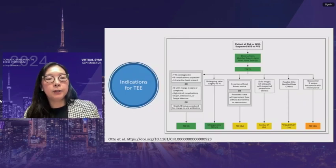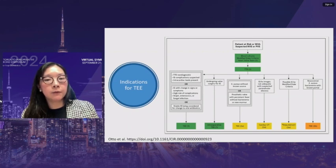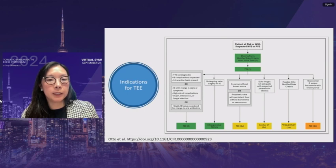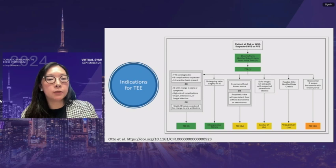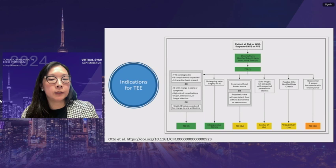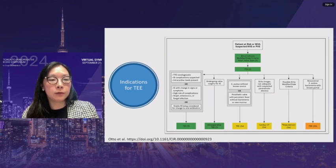Guidelines indicate that TTE is first-line imaging, but TEE is indicated for several reasons. In suspected infective endocarditis with a non-diagnostic TTE, there is a Class 1A indication for TEE. If complications are anticipated or intracardiac leads are present, TEE is also Class 1A. For diagnosed IE, TEE is warranted with changes in signs or symptoms, or if the patient has high-risk organisms such as staph, enterococci, or fungal infections. A new Class 1A indication: stable IE being considered for transition to oral antibiotics, derived from the POET trial where patients switched from IV to oral antibiotics after 10 days, requiring a TEE within one to three days of the change to ensure stability.